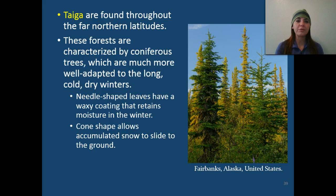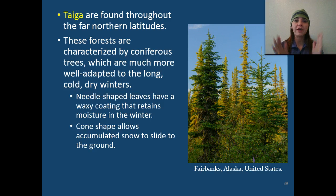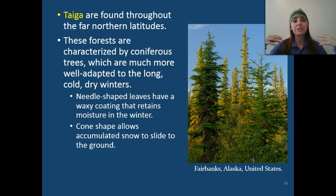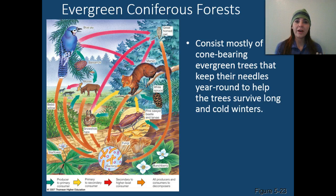Taiga are found throughout the far northern latitudes, and these forests are characterized by coniferous trees, which are much more well-adapted to those long, cold, dry winters. They have needle-shaped leaves that help them conserve water, and they also have a cone shape so that whenever snow accumulates on the branches, instead of the branches breaking, the snow can fall off easily. These evergreen coniferous forests consist of cone-bearing trees that keep their needles year-round.